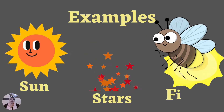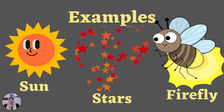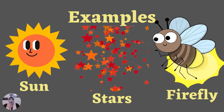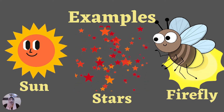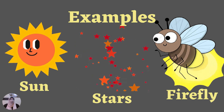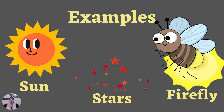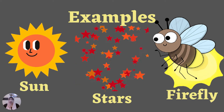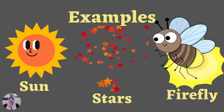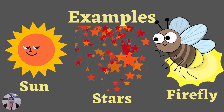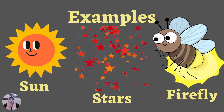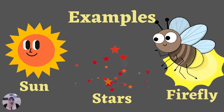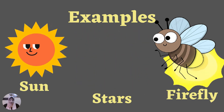What else? Fireflies. Some insects and also some plants produce their own light. This is a natural source of light that people cannot control.